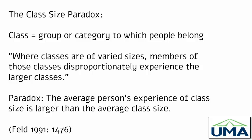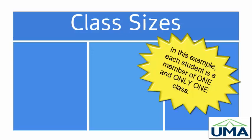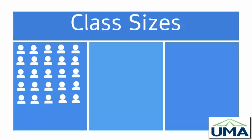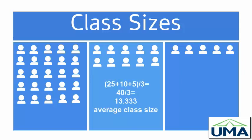The key here is that there are two different kinds of averages. Let's look literally at class sizes and imagine we have three classes. In the first class we have 25 individuals, in the second class we have 10, and in the third class we have 5. If we just take the average of class sizes across the three classes, we add 25 plus 10 plus 5, which equals 40, then divide by 3. The result is 13.33 — thirteen and a third — the average class size across classes.